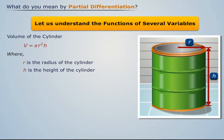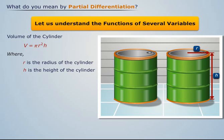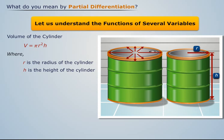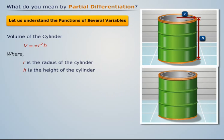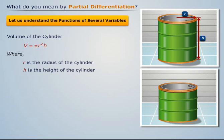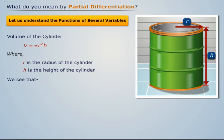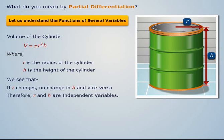The volume of a cylinder depends on these two variables, r and h. On changing the value of r, we see that there is no change in h. Similarly, on changing the value of h, we see that there is no change in r. Therefore, r and h are independent variables.